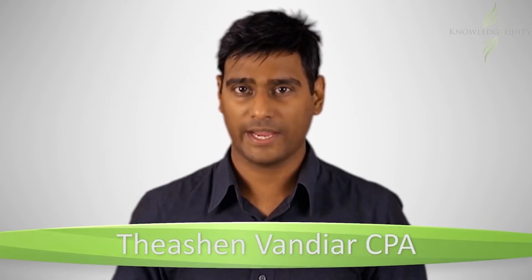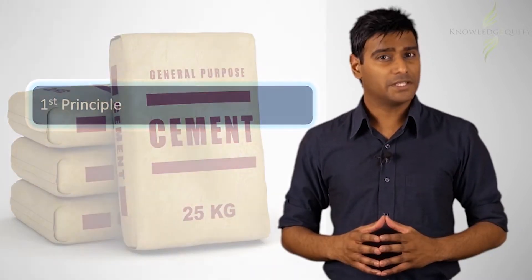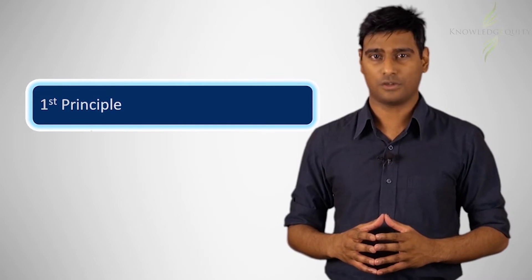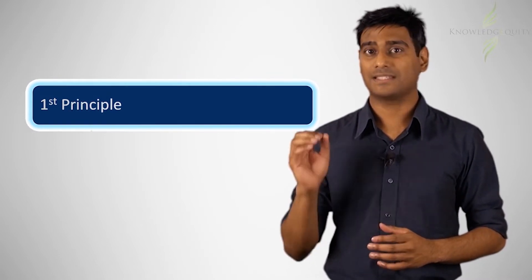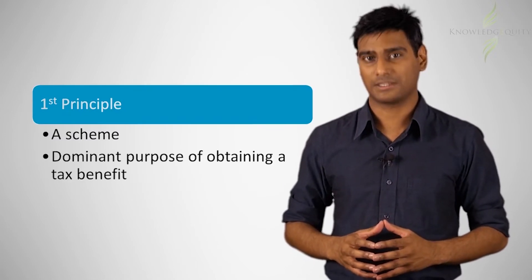The case of Peabody was the first High Court case to discuss Part 4a. There are two major principles arising out of this case. The first principle from Peabody relates to issues of the first and third requirement of Part 4a, that there be a scheme and that there be a dominant purpose of obtaining a tax benefit.